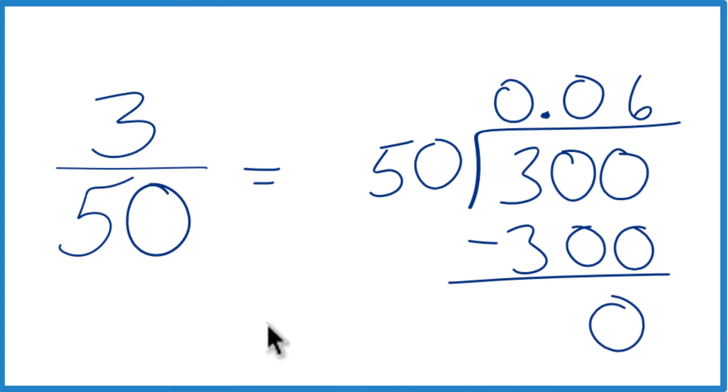So just like we found with the calculator, the fraction 3 fiftieths equals the decimal 0.06.